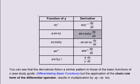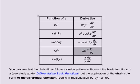If the function of y is a multiplied by the cosine of ky, its derivative is minus a multiplied by k multiplied by the sine of ky, multiplied by dy by dx. If the function of y is a multiplied by e to the power ky, its derivative is a multiplied by k multiplied by e to the ky, multiplied by dy by dx.